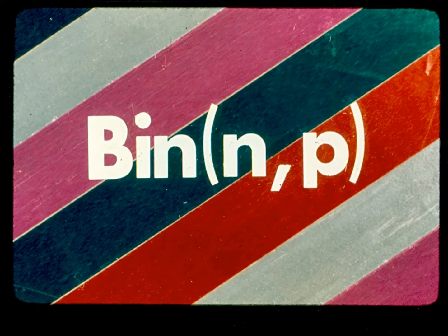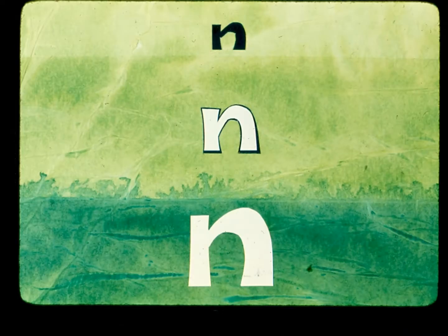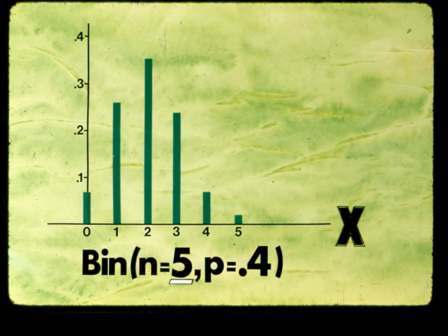This expression summarizes the crucial information about the distribution. When numbers are inserted, such as N equal to 5 and P equal to 0.4, we have specified a particular exact distribution. Now let's see how these parameters control the shape of the distribution. Here's the familiar pattern with N equal to 5 trials and P equal to 0.4, giving the probabilities associated with the six possible outcomes of our wound disruption example.